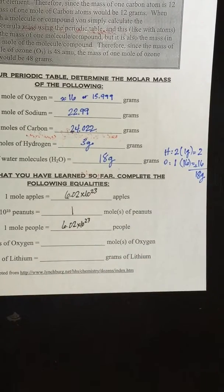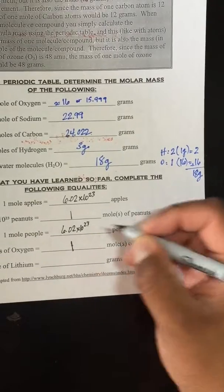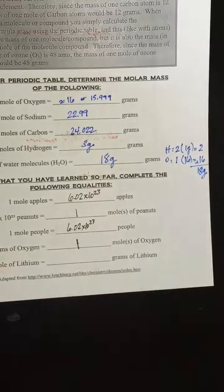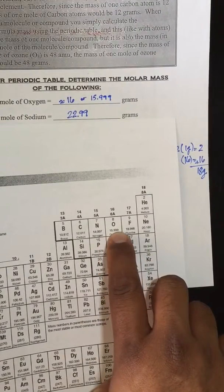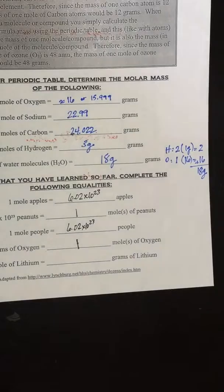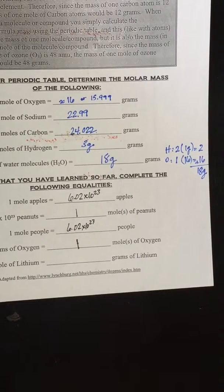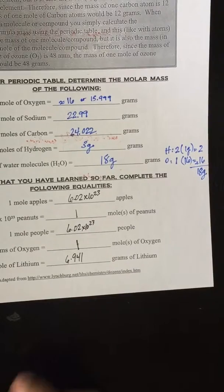Sixteen grams of oxygen are how many moles of oxygen? One. Because if you look at the mass of oxygen — sixteen — and divide it by sixteen, you get one mole. One mole of lithium equals how many grams of lithium? 6.941 grams.